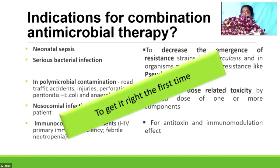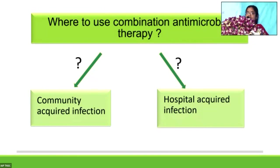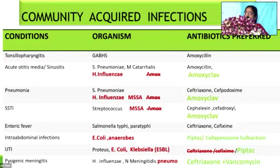Where do we use combination therapy — only in hospital-acquired infections, or also in community-acquired infections? Common community infections include tonsillo-pharyngitis, otitis media, recurrent sinusitis, pneumonia, and skin and soft tissue infections where we use amoxicillin. But amoxicillin will not help when the organism is H. influenzae or MSSA — in such cases, you will have to resort to amoxiclav.